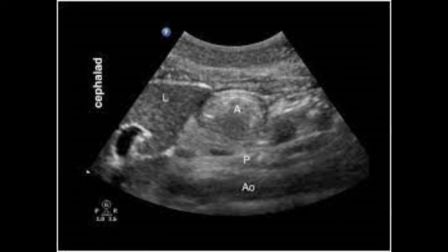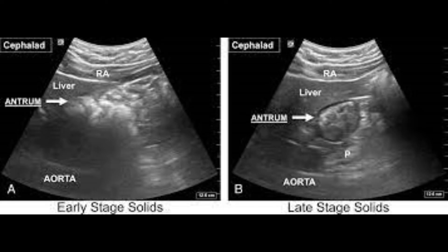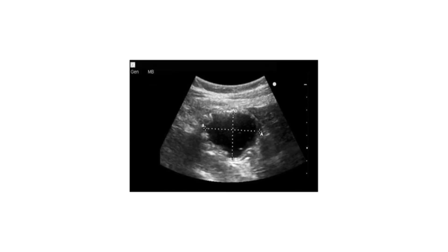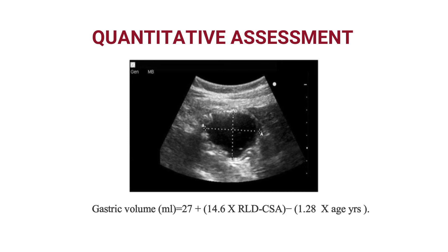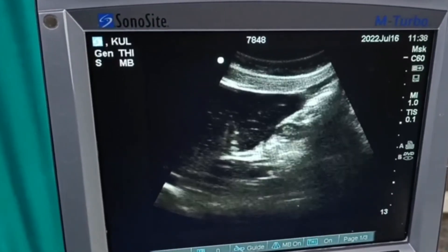Ingestion of solids initially gives a 'frosted glass' appearance, and after some time the solids appear hyperechoic with a heterogeneous consistency within a distended antrum. Current gastric volume measurement is developed only for assessment of clear fluid in the stomach, not for solid content. One can use the calipers of ultrasound equipment to measure the cross-sectional area, and use the given formula for that. The upper limit for this is 1.5 ml per kg.